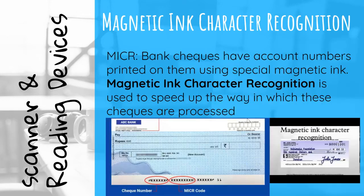Magnetic Ink Character Recognition (MICR): Bank checks have account numbers printed on them using special magnetic ink. MICR is used to speed up the processing of these checks — the account number for that check is printed using special magnetic ink and a machine can read it. This is being phased out as checks are not being used as much anymore in South Africa.